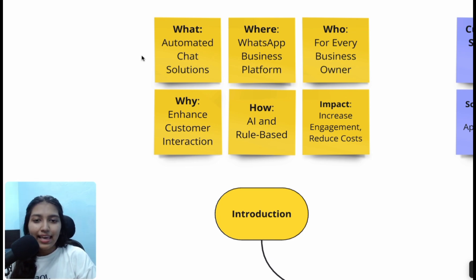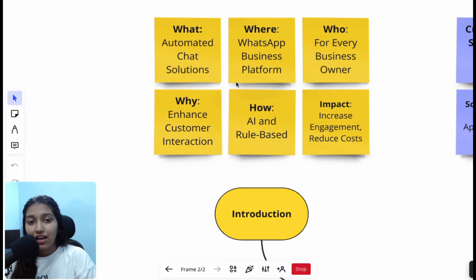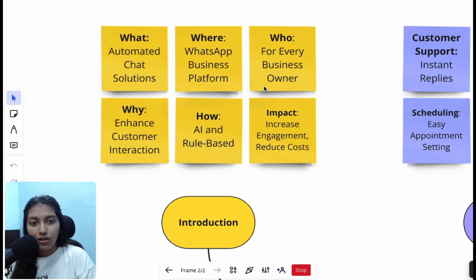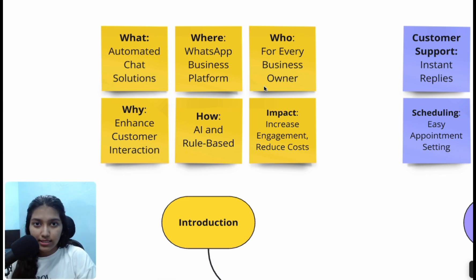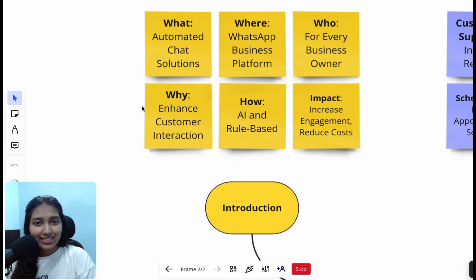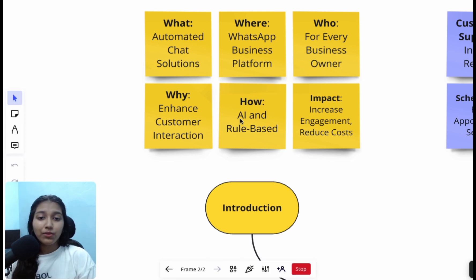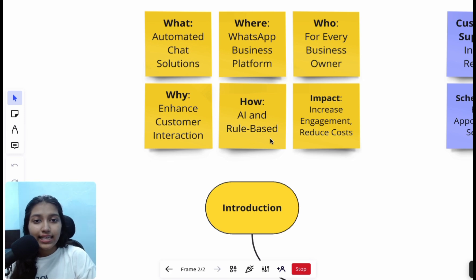Where does AI come into play? AI comes into play for personalization — we don't want to send fixed messages; instead we want a naturally flowing conversation. Where? It is going to be on the WhatsApp Business Platform. Who is it for? It is for every business owner that receives volume on WhatsApp or whose customer base exists on WhatsApp. Why? To enhance customer interaction — responding in less time is very important. How? We will be using AI and rule-based workflows: AI for personalization and rule-based workflows for defining the triggers and actions.